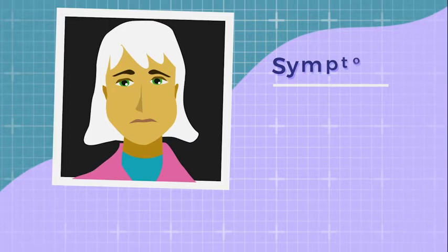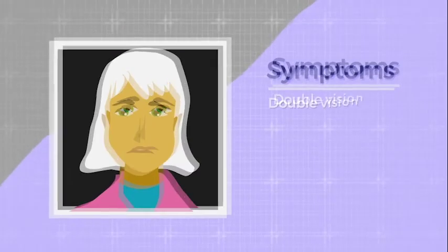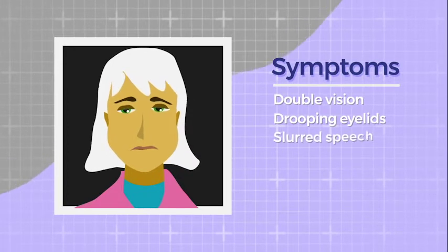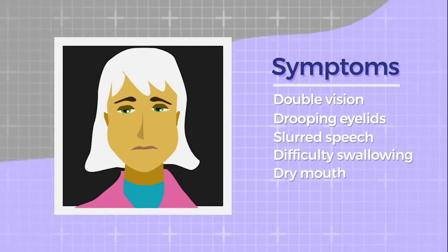An illustrated woman appears on screen. People with botulism may have double vision, drooping eyelids, slurred speech, difficulty swallowing, and dry mouth.